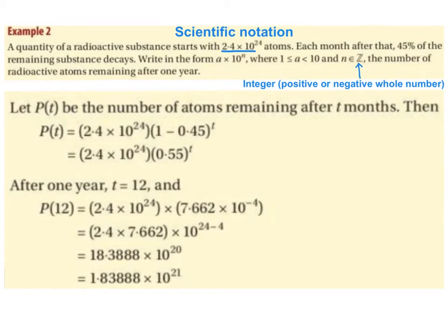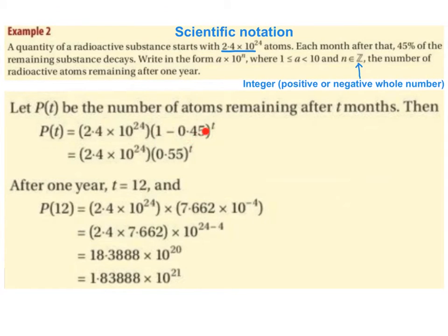We're going to let P of T be the number of atoms remaining after T months, where T represents time. So P of T is going to be 2.4 times 10 to the power of 24, multiplied by 1 minus 0.45, raised to the power of T.